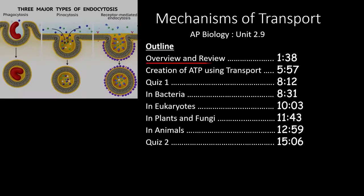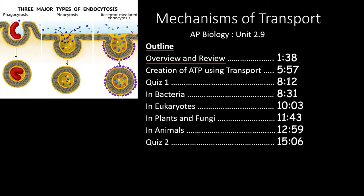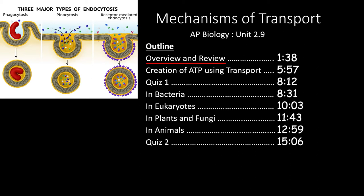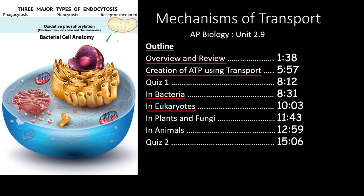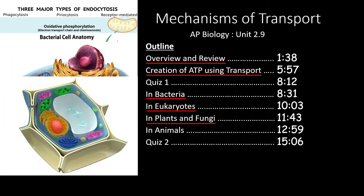We will start with an overview and review of the mechanisms of transport, and we will see how active and passive transport are essential for the creation of ATP in all organisms. After the quiz, we'll take a look at how these mechanisms function in bacteria, eukaryotes, plants, fungi, and animals. If you only need to review one of these topics, feel free to skip to the times outlined here.